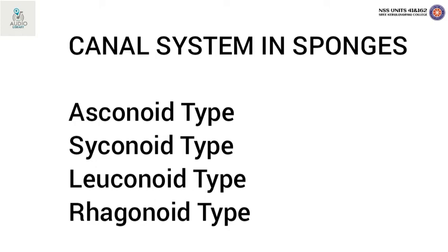Asconoid type is found only in very few sponges such as Leucosolenia and Olynthus. It is a very simple type of canal system.